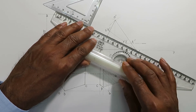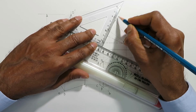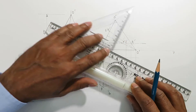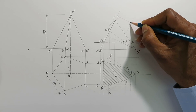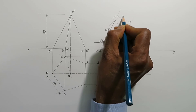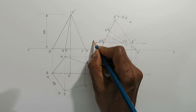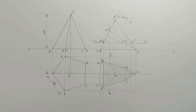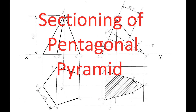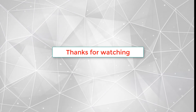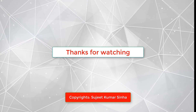We have drawn the front view and the sectional top view of the pentagonal pyramid which is lying on the horizontal plane on one of its triangular faces. The sectional or cutting plane is horizontal and bisects the axis of the pyramid. Thanks for watching this video.